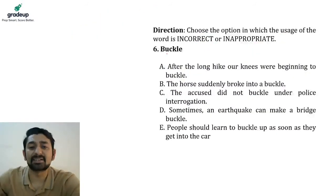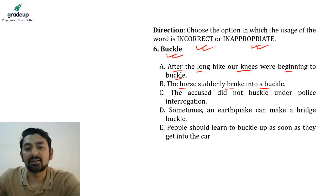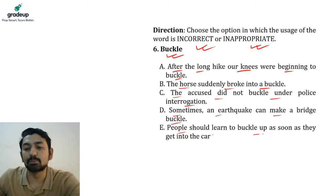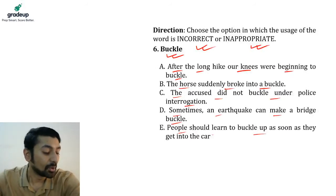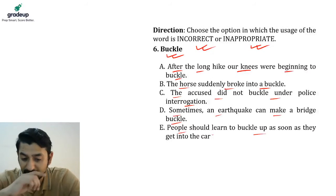Question six — again select the incorrect or inappropriate usage. The word is 'buckle.' Option A: After the long hike, our knees were beginning to buckle. Option B: The horse suddenly broke into a buckle. Option C: The accused did not buckle under police interrogation. Option D: Sometimes an earthquake can make a bridge buckle. Option E: People should learn to buckle up as soon as they get into a car. Which is incorrect?